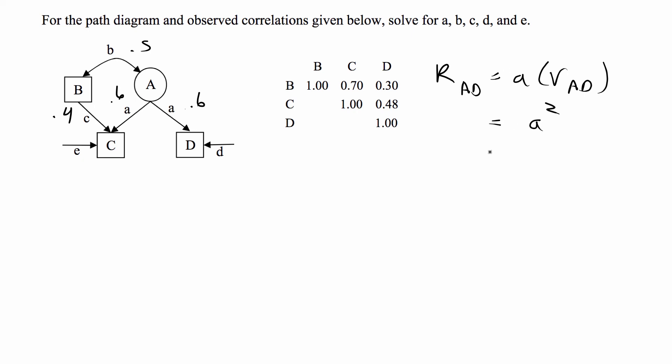So this is equal to A squared, which we already know is equal to 0.36. So D is going to be equal to the square root of D squared, which is equal to the square root of 1 minus 0.36, which is equal to 0.8.